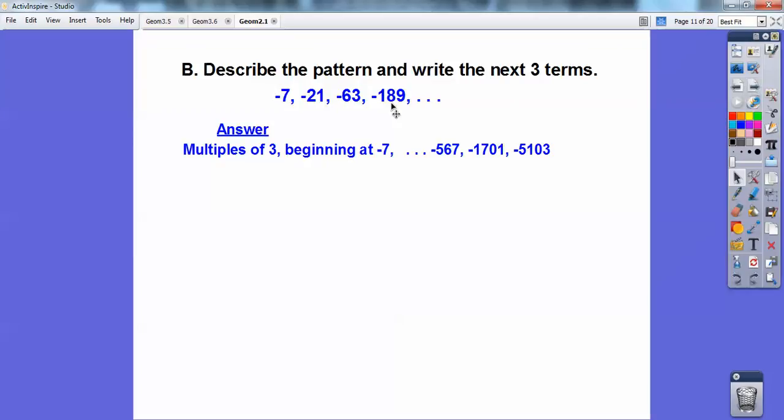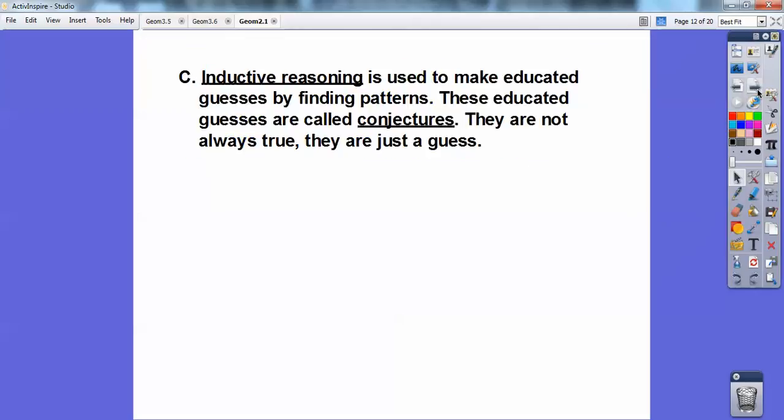So I just multiply this by 3, and I get -567. Then multiply -567 times 3, and get -1,701. Then times 3, you get -5,103.